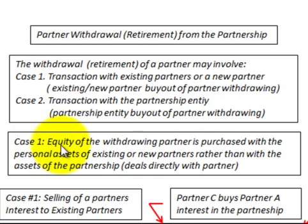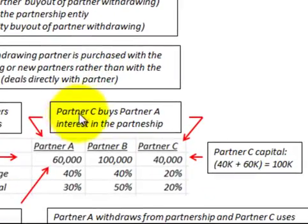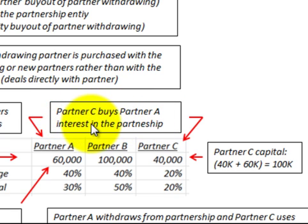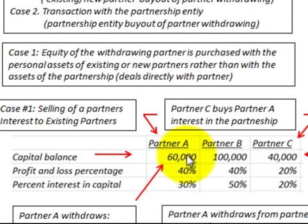In case one, the equity of the withdrawing partner is purchased with the personal assets of the existing or a new partner, rather than with the assets of the partnership itself. In our example, we have partners A, B, and C, each with a capital balance. Partner C is going to buy partner A's $60,000 capital balance or interest in the partnership.